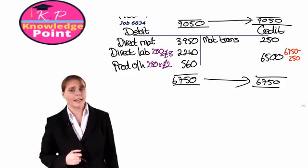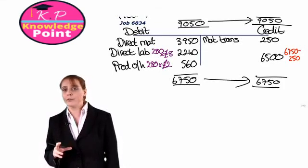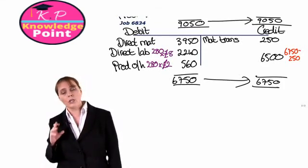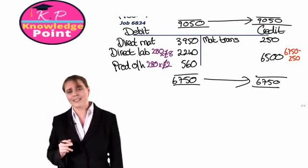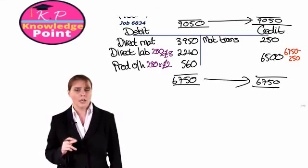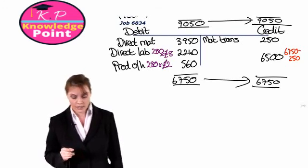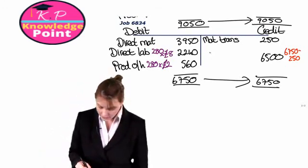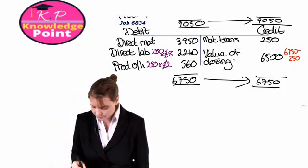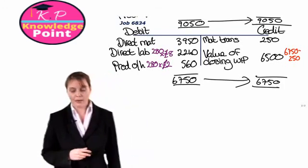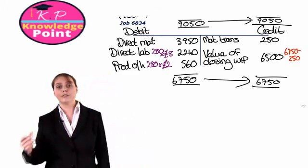We need to be a little careful here. Our balancing figure is £6,750 minus £250, which gives us £6,500. Remember, in the question we were told that job 6834 was still incomplete by the end of the month. So this balancing figure of £6,500 doesn't represent the value of finished goods. Instead, this is our closing balance — the value of closing work in progress — and it will be the opening value for job 6834 in the following period.